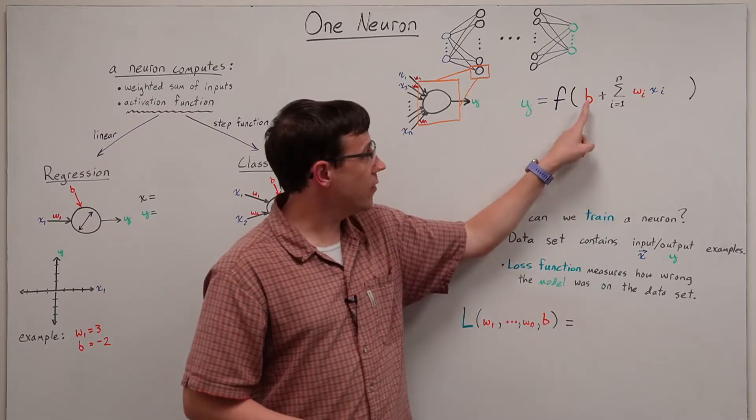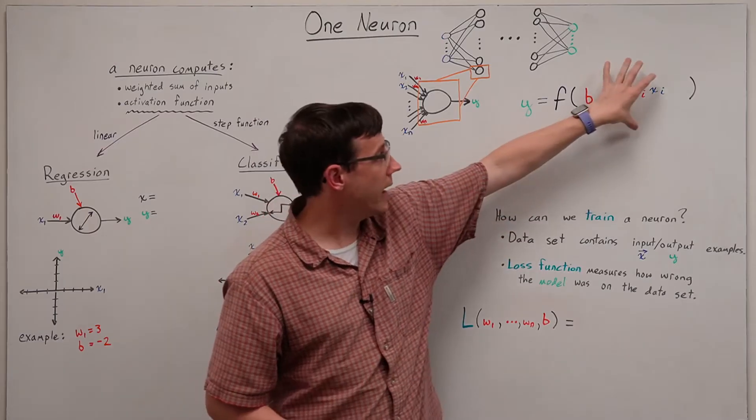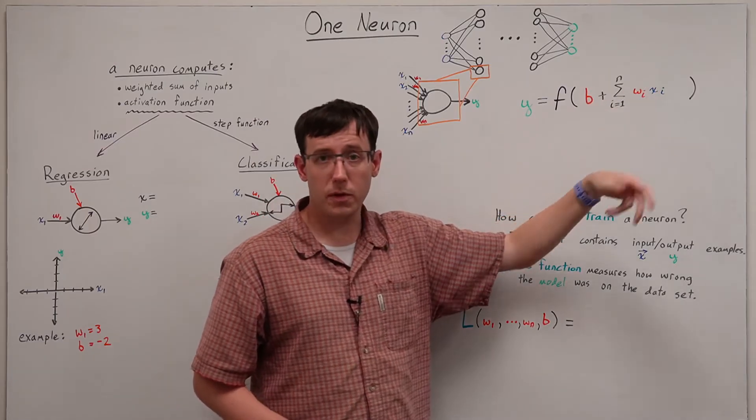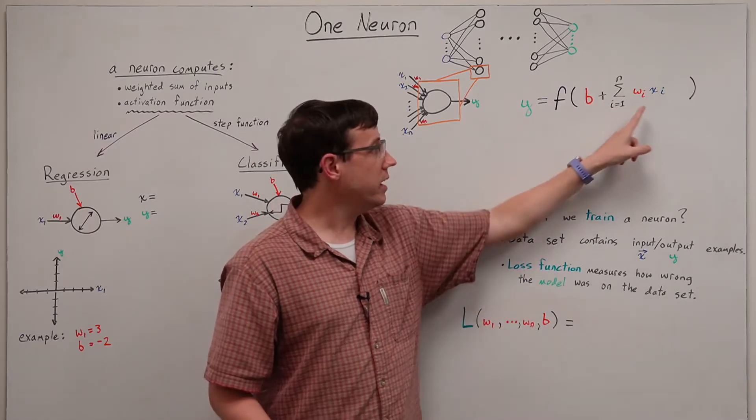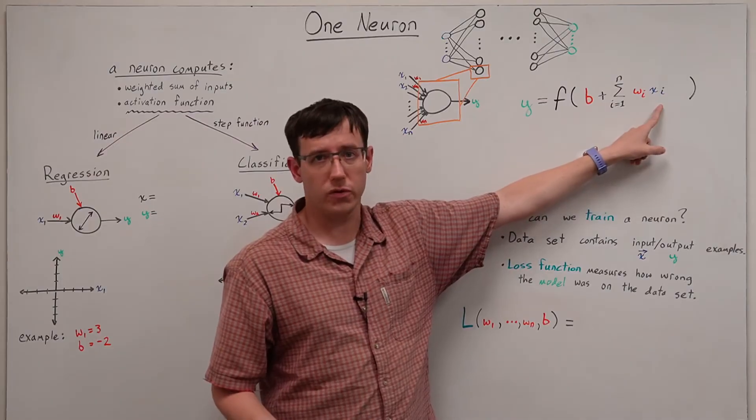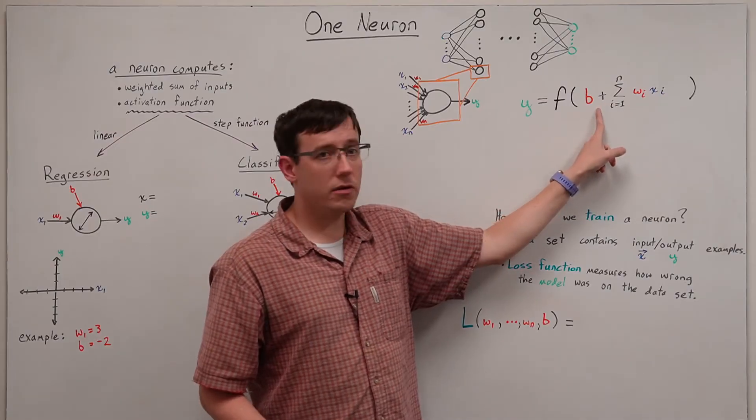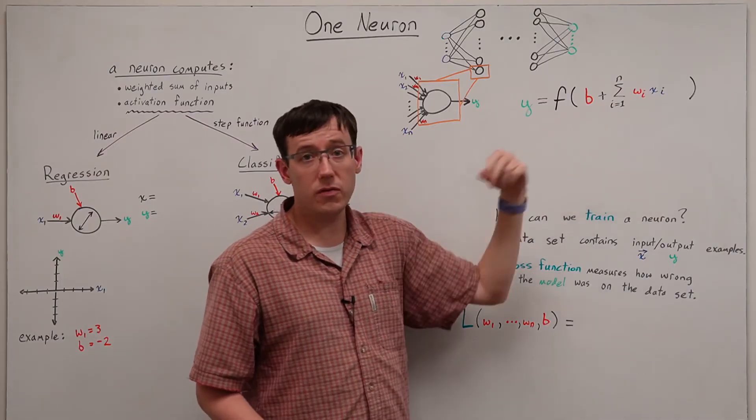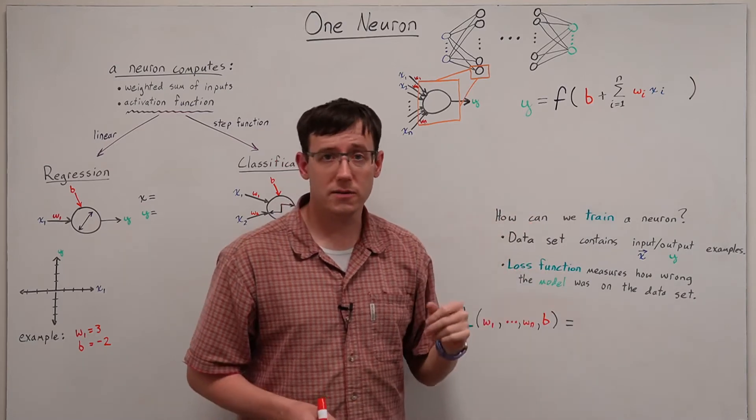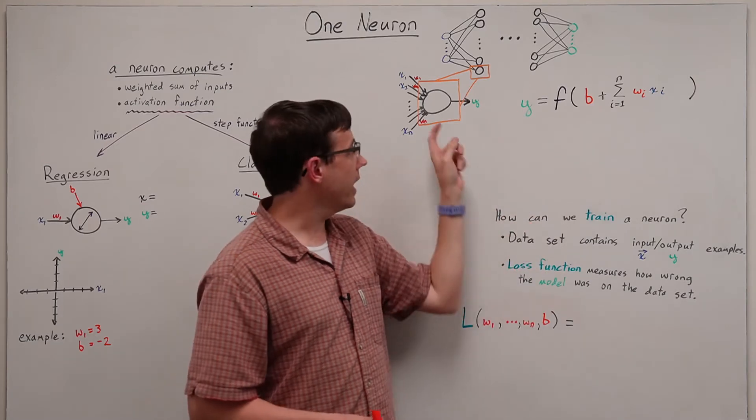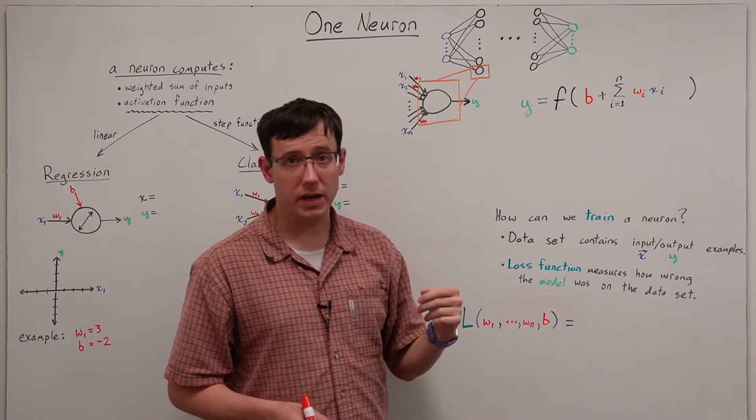The purpose of the bias is to allow this sum to be non-zero, even if all of the inputs were zero. And we can think of this bias as behaving like another weight, and so I will often draw it as another arrow coming into the node.